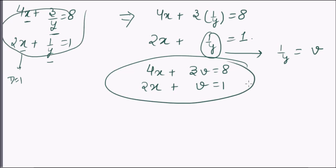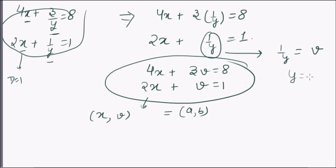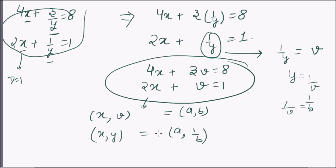Thus we have attained a linear pair. After solving by any method, say the solution is (a, b) — this is the solution of the variables x and v. But we have to find x and y. Y is the reciprocal of v because 1/y = v, so y = 1/v = 1/b. Thus x = a and y = 1/b, where a and b are the solution of this modified pair.